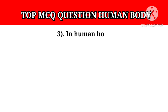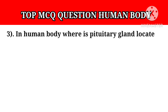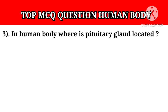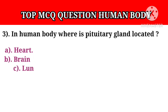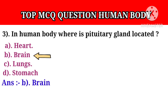Question number 3: In the human body, where is the pituitary gland located? Option A: Heart. Option B: Lungs. Option C: Pancreas. Option D: Liver. Answer: Brain.